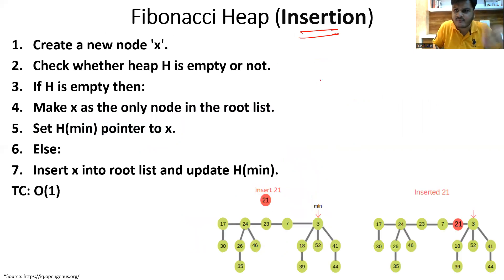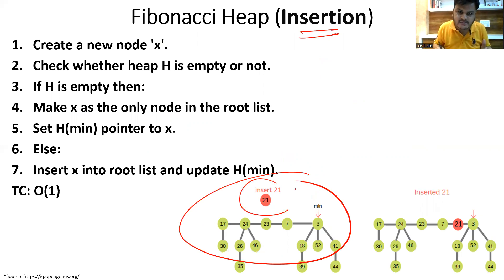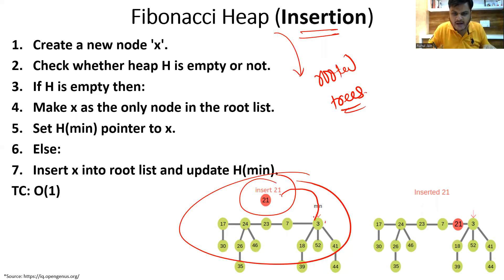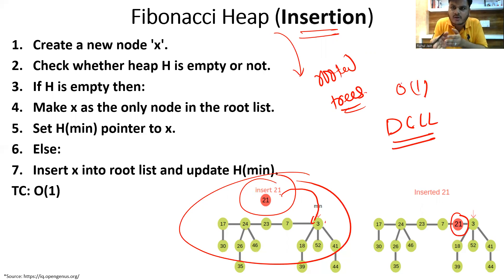The next operation is insertion. If we want to add a new node — say node 21 — to the existing heap, the concept is simply to find the pointer. Since Fibonacci heap is a collection of rooted trees structured like a doubly circular linked list, we simply go to the pointer and add the node there. It takes O(1) — just create the node and add it via the linked list. The complete concept of Fibonacci heap revolves around a doubly circular linked list, allowing movement from first to last and last to first.